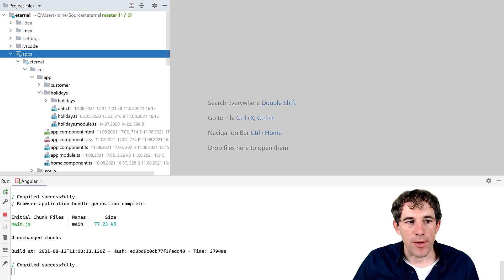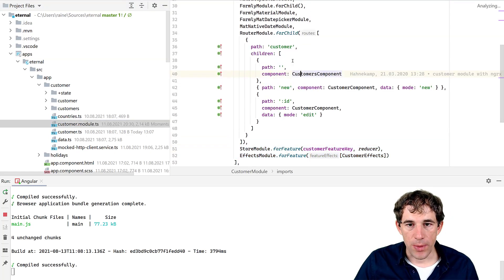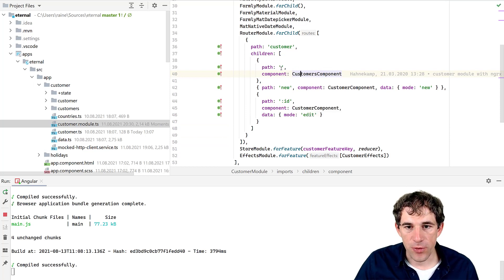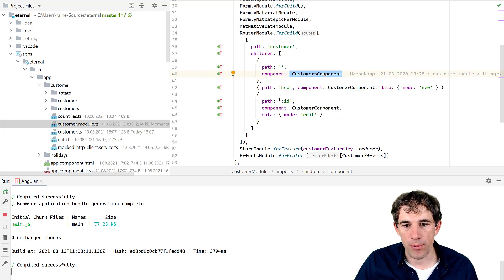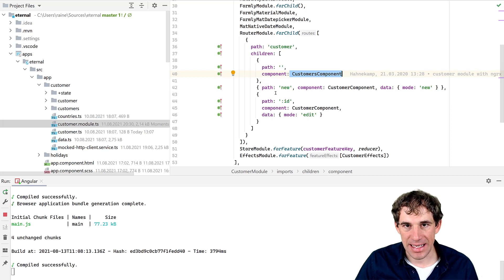And there is of course a customer module itself, which if we take a look at it, consists of three different URLs. We have one which is just representing the list. This is the customers component. And then we have two further paths or URLs where the user can add or edit an existing customer.